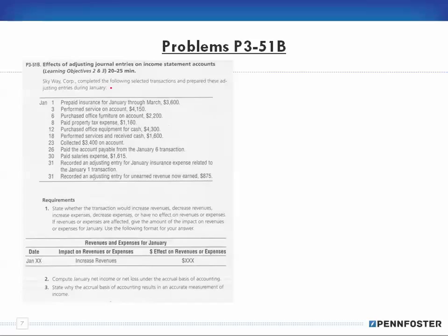Problem 51 - and possibly 52 - covers Skyway, which completed selected transactions and prepared adjusting entries during January. Part one asks whether each transaction would increase revenues, decrease revenues, increase expenses, decrease expenses, or have no effect. If revenues or expenses are affected, give the amount of the impact for January. Use the following format for your answer: the date, the effect type, and the dollar amount.